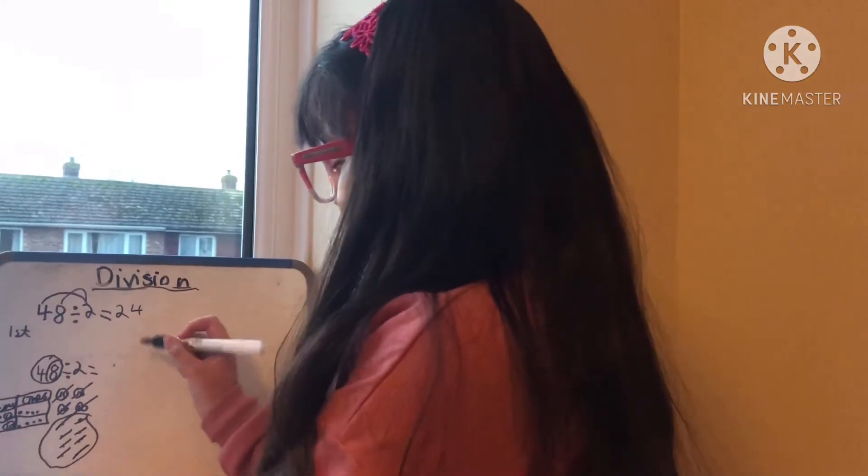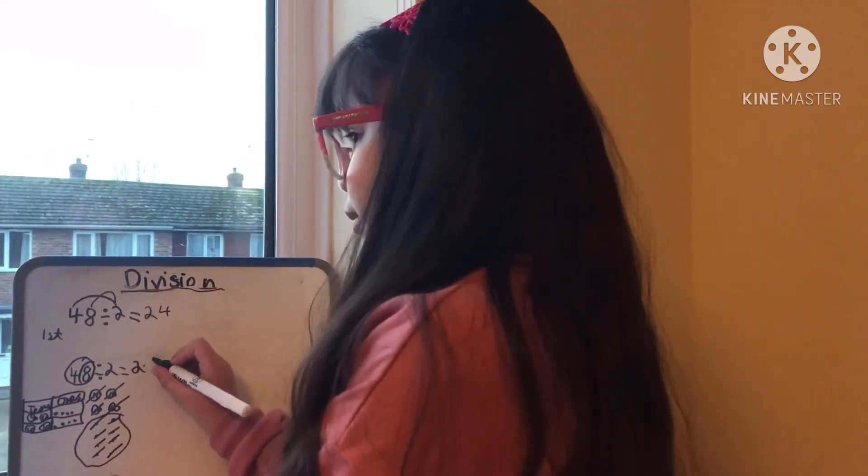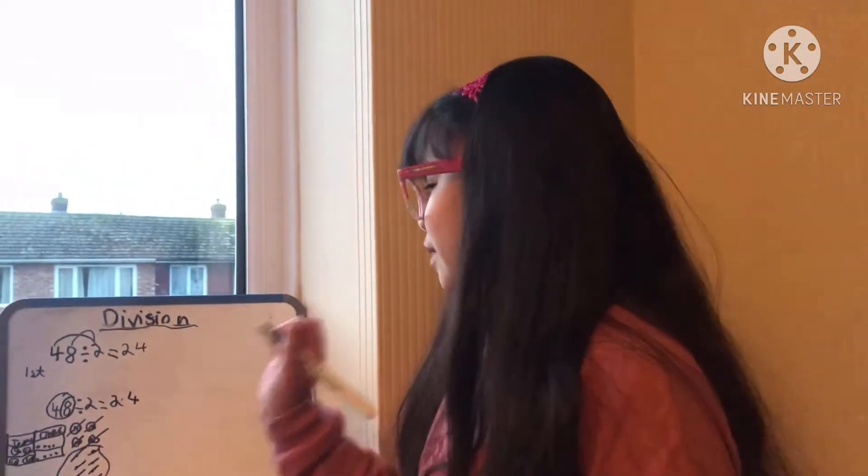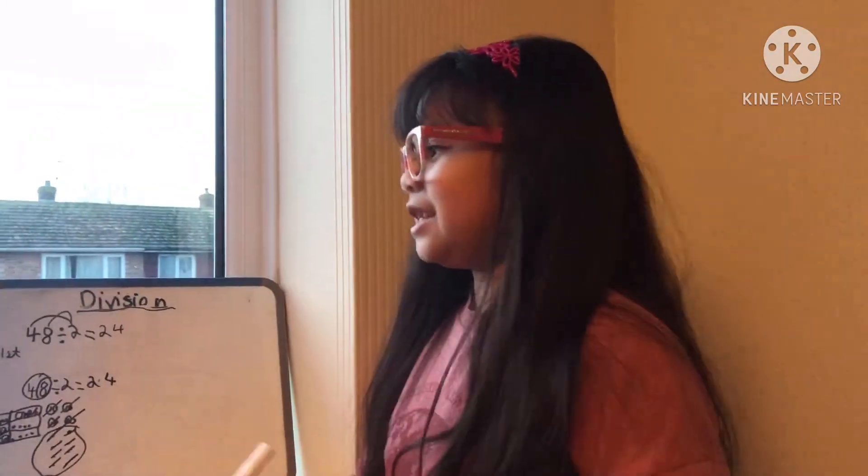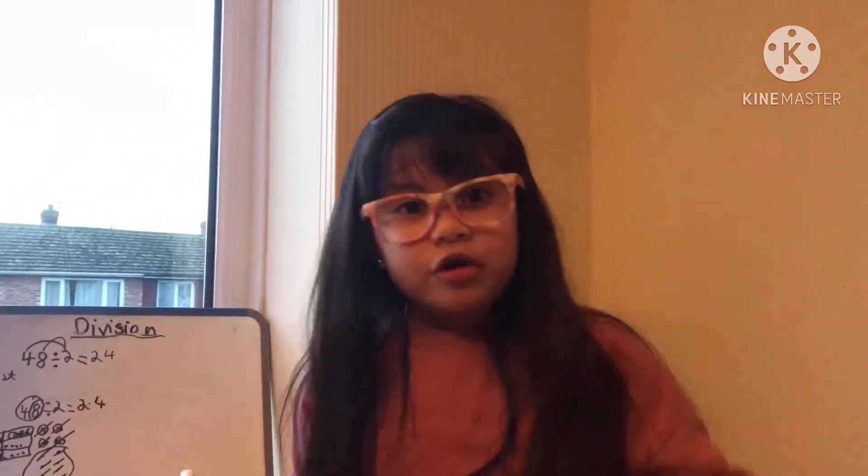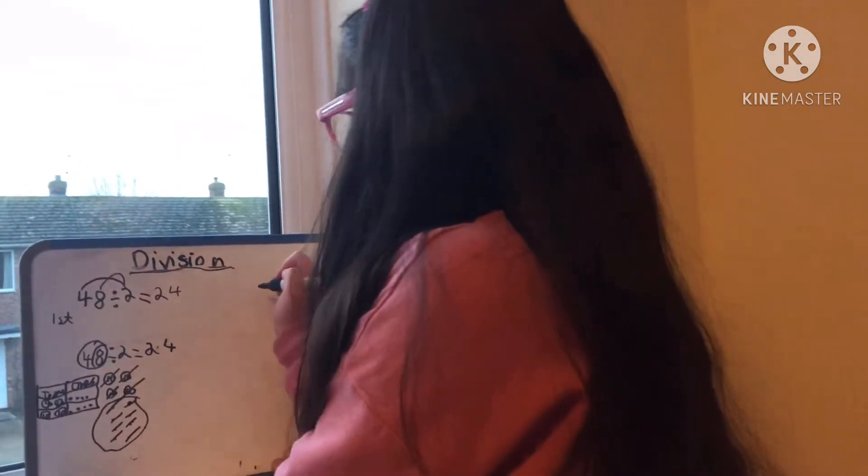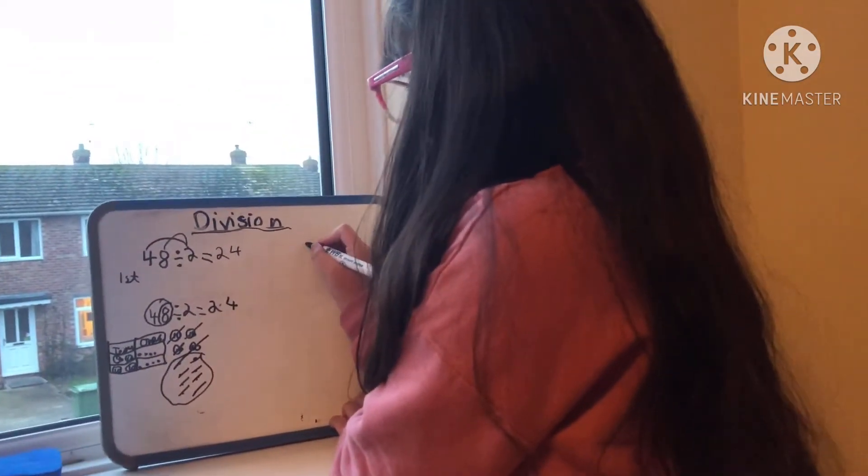So we just write 24 next to the equals. Okay, so we've done our 24. And lastly we're going to go with the part-whole model. We're going to write the same number sentence.